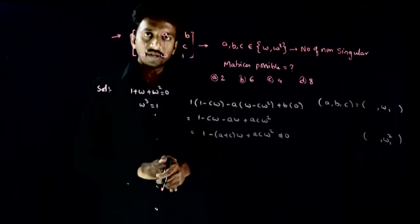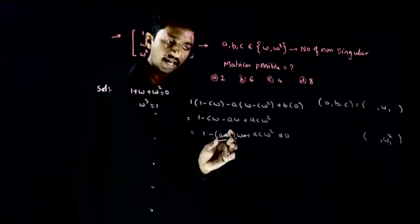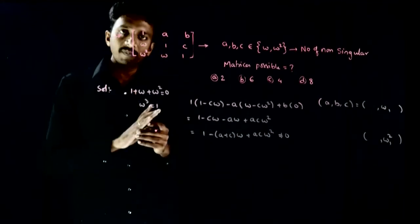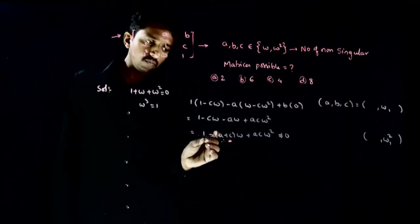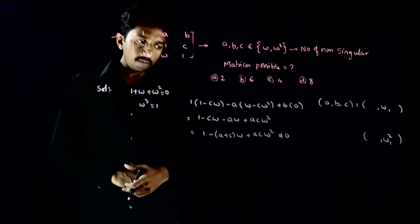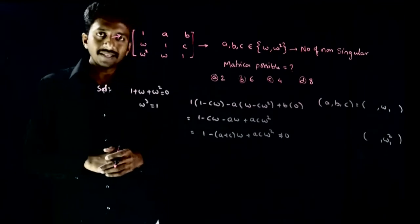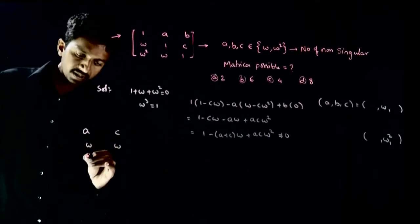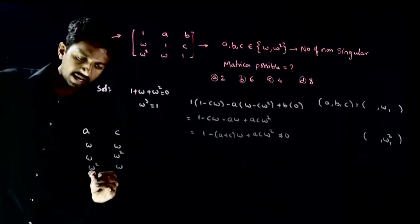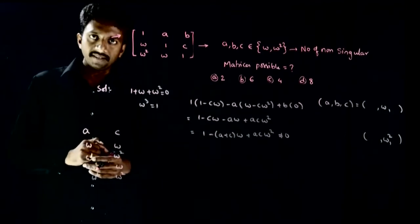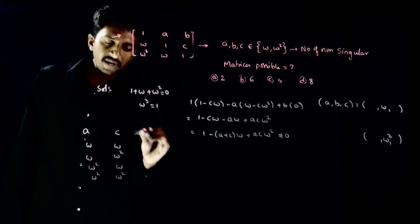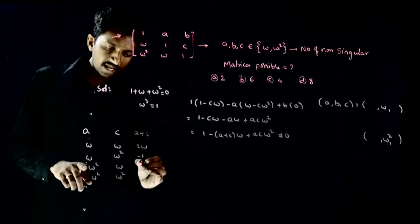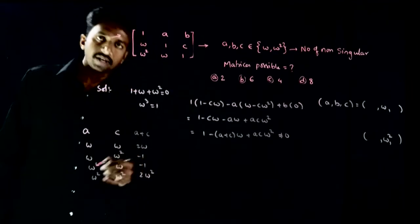Let us consider the ordered triplet (a, b, c). Since b does not affect the determinant, we focus on what values a and c should take. Drawing a table of the four possible (a, c) combinations: (ω, ω), (ω, ω²), (ω², ω), (ω², ω²). The corresponding values of a+c are: 2ω, ω+ω² = −1, −1, and 2ω² respectively.